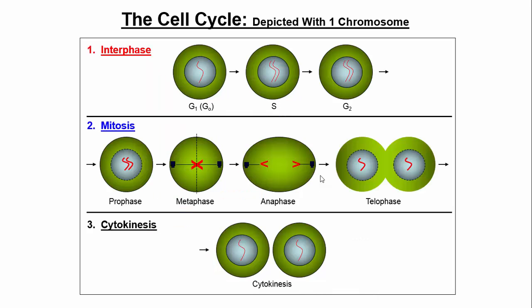Now let's look at the cell cycle in more detail, depicted with one chromosome. Remember, humans have 46 chromosomes total — 23 pairs, two of each. I'm following through with one chromosome to show how it works. We have three main phases: interphase, mitosis, and cytokinesis. In interphase, during G1 the cell prepares for DNA replication. In S-phase, the chromosome duplicates. If this was chromosome 3 from the father, after replication both copies are chromosome 3 from the father — each with half old material and half new. Then G2 follows.